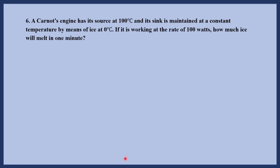The next question: a Carnot's engine has its source at 100 degrees Celsius and its sink is maintained at constant temperature by ice at 0 degrees Celsius. If it is working at the rate of 100 watts, how much ice will melt in 1 minute? Power is 100 watts, that is 100 joules per second. Power is work done per unit time, so work done in 1 minute equals 100 into 60, that is 6000 joules.